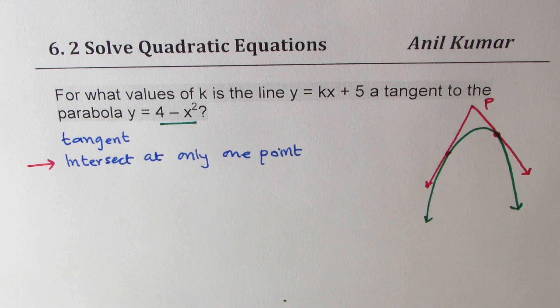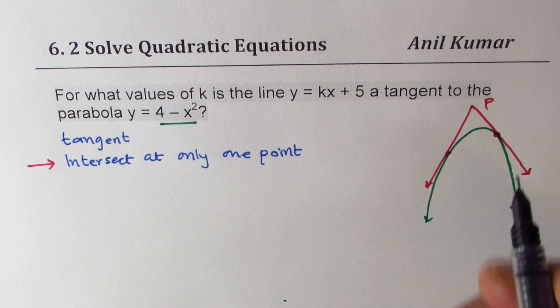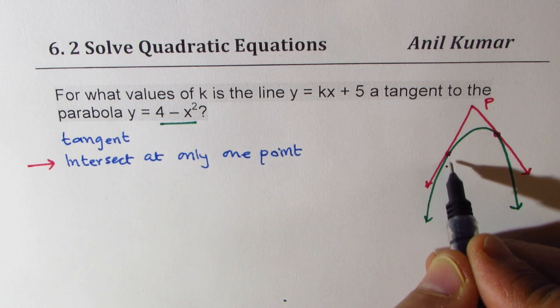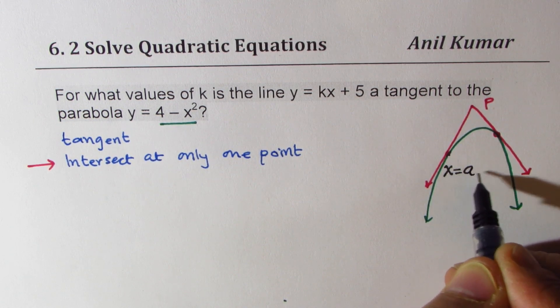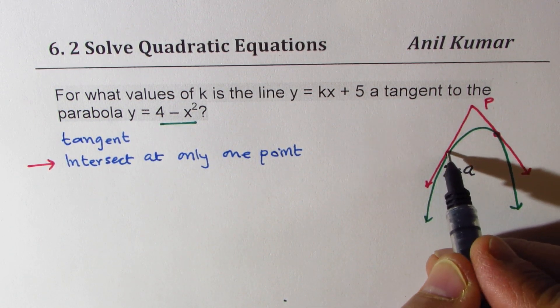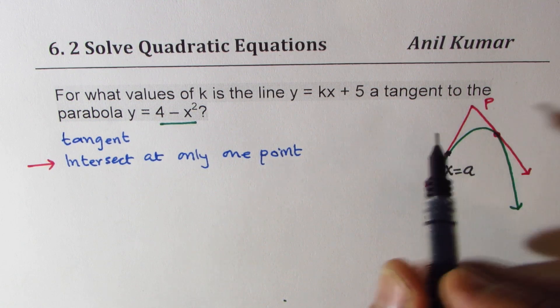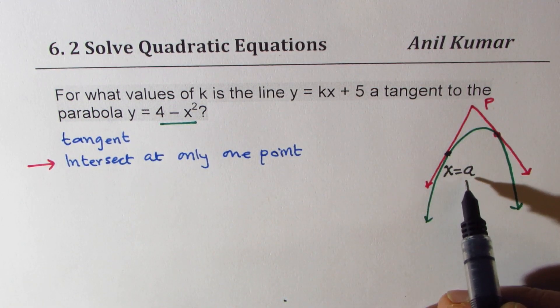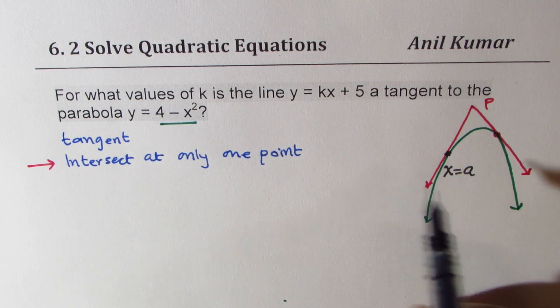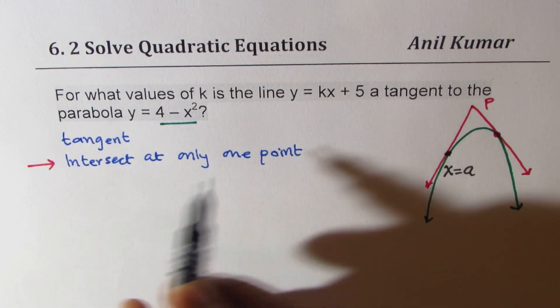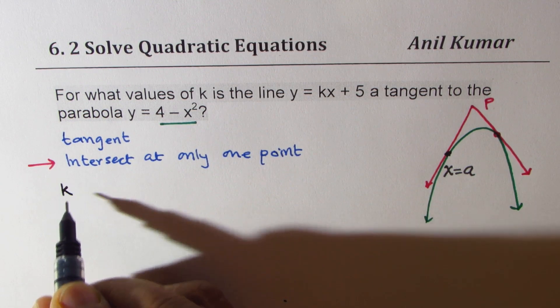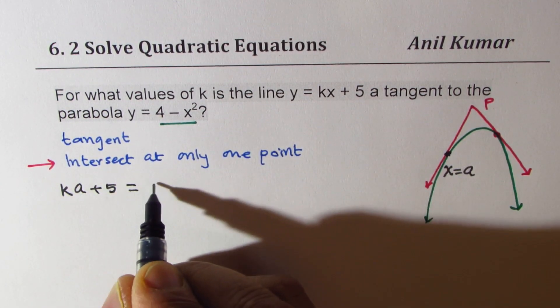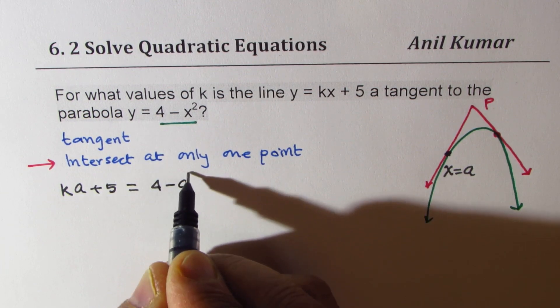So what you notice here is that at this point, let's say at x = a, both the lines—the line and the curve—have this x = a same value. Correct? So we could actually write down that ka + 5 should equal 4 - a².